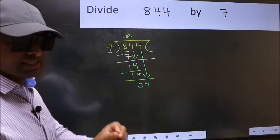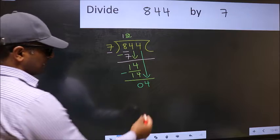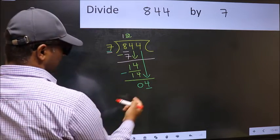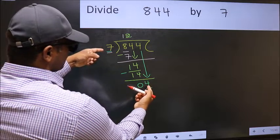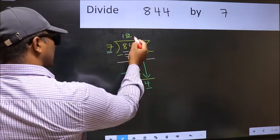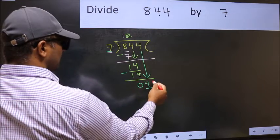And the mistake is this: here we have 4 and here 7. 4 is smaller than 7, so what many do is they directly put dot and take zero.